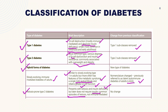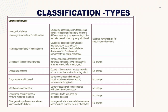Other subtypes include monogenic diabetes, due to monogenic defects in beta cell function or insulin action, caused by specific gene mutations. Clinical manifestations require different treatments — some occurring in the neonatal period, others in early adulthood. In insulin action defects, diabetes develops without obesity when beta cells do not compensate for the insulin resistance.